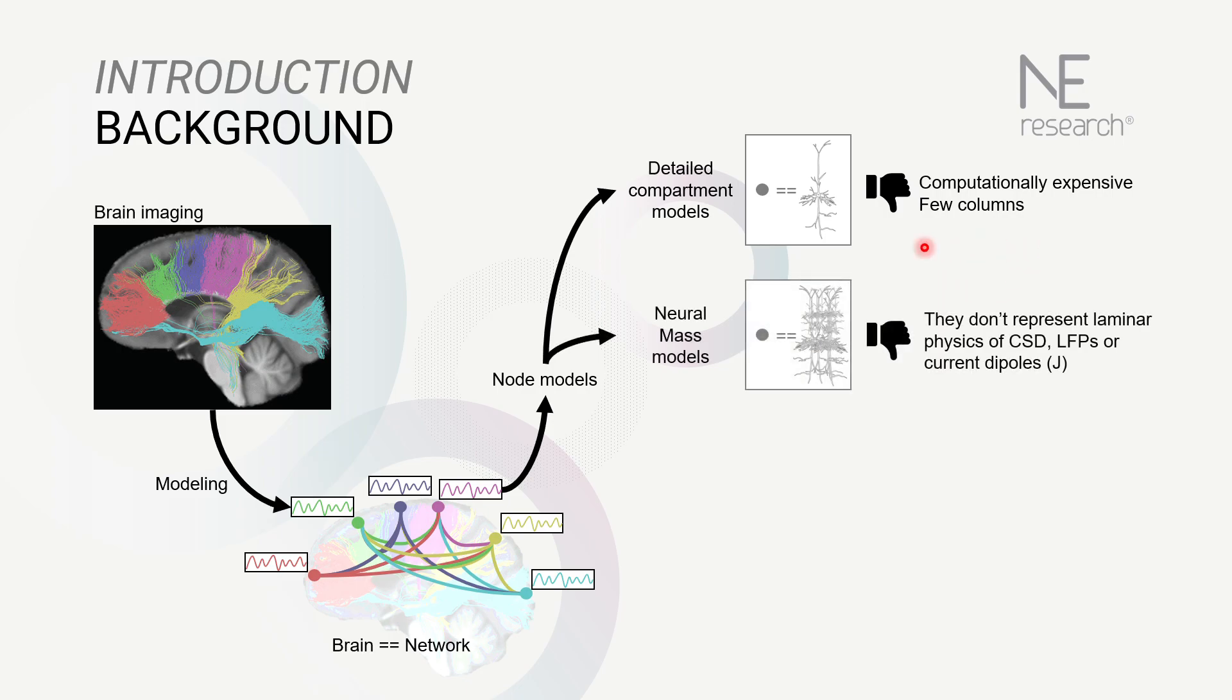On the other hand, neural mass models provide average representations of neural populations applicable to larger cortical areas and link to physiology. However, they don't represent the laminar physics of current source density, local field potentials, or current dipoles.